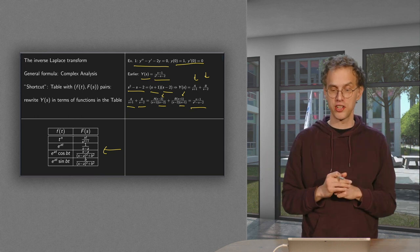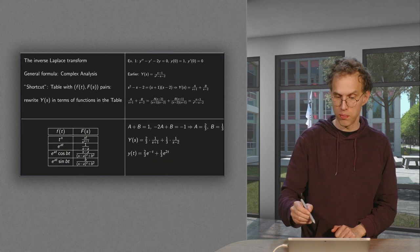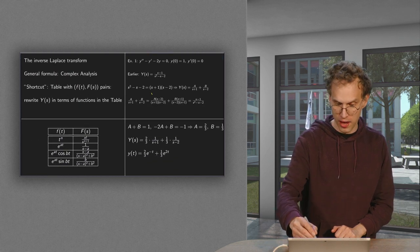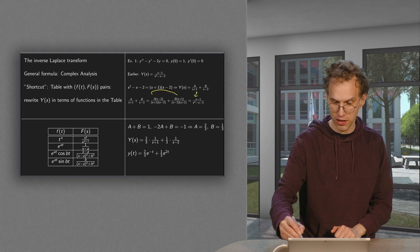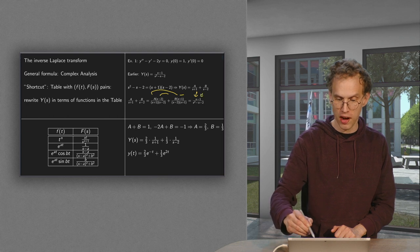The denominators are the same so the numerators also have to be the same. And that means if we compare numerators we have A plus B times s, so that has to be equal to 1. And then we have minus 2A plus B, so that has to be equal to minus 1.